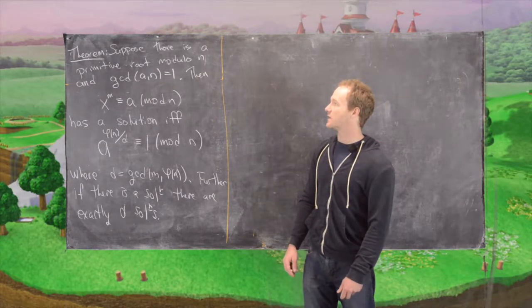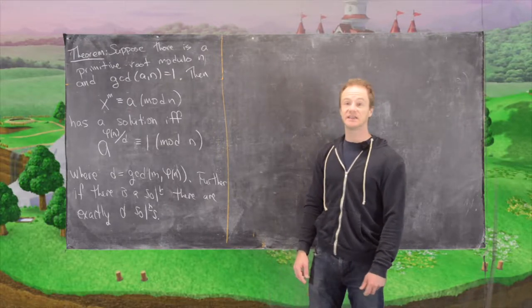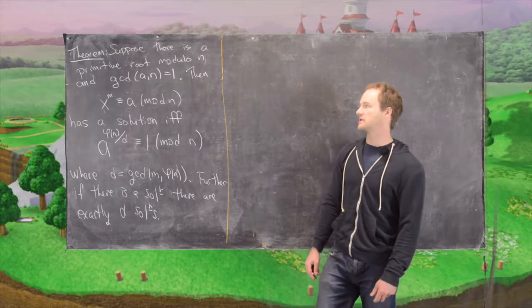Suppose that there is a primitive root modulo n and that the GCD of a and n is 1, so they're relatively prime.